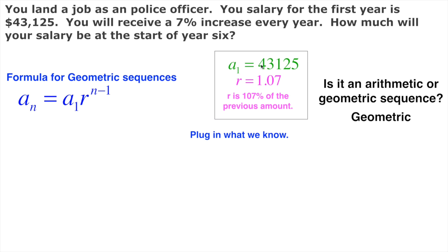If we took our first term and multiplied it by 1.07, that would be 7% higher than our first term. That's where we get that from.